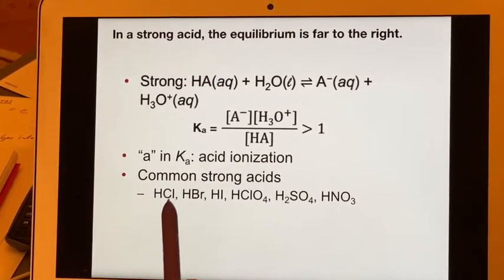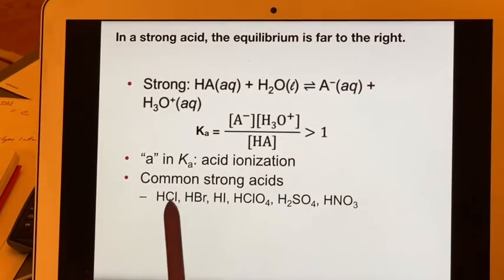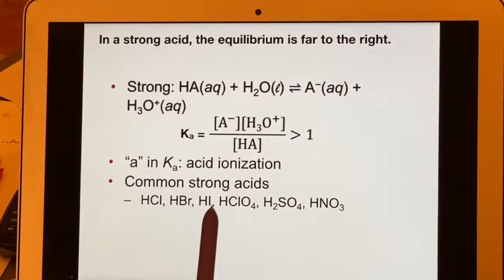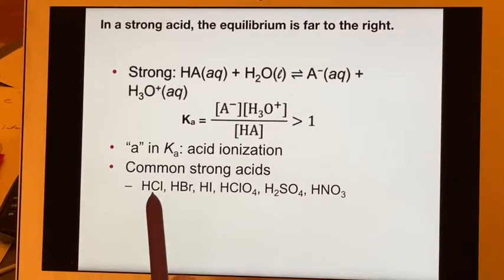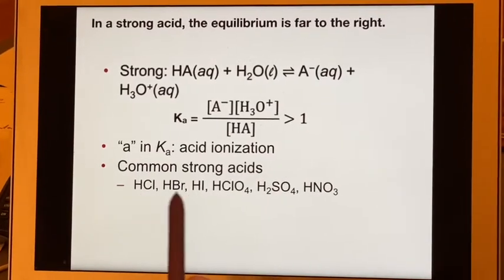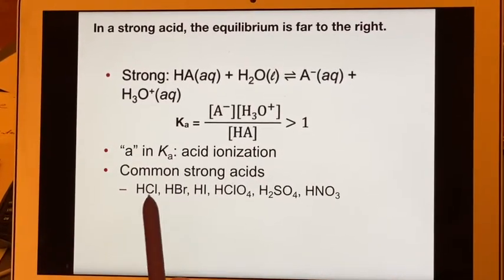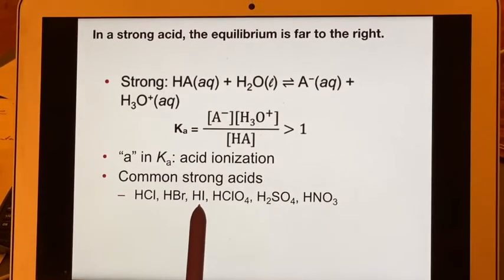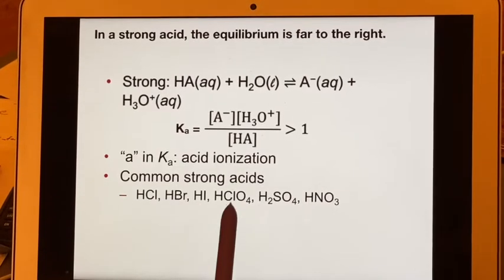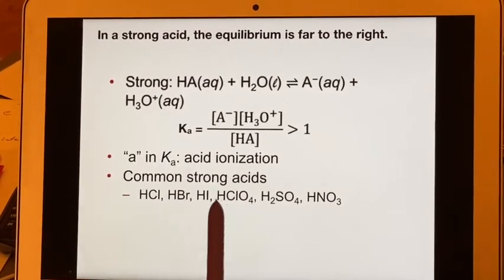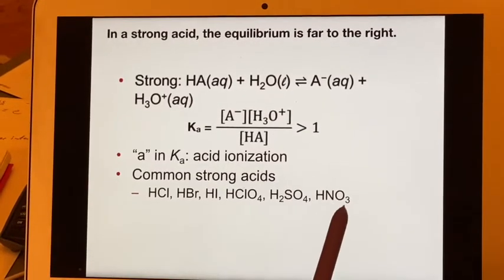If you think about it, the first three are all with the halogens. So they're in that column. You will notice HF, hydrofluoric acid, is not in this list, but hydrochloric, hydrobromic, and hydroiotic are here. Then you have perchloric acid, sulfuric acid, and nitric acid.